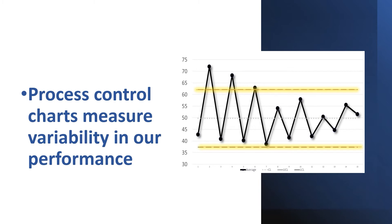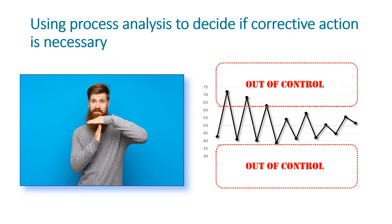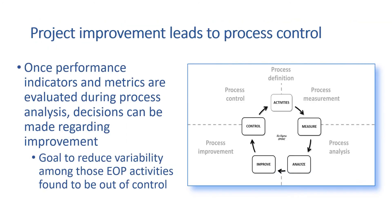The Six Sigma process control chart is constructed to represent upper and lower control limits, shown in these red boxes. These limits form the boundaries for what is considered an acceptable and unacceptable degree of variance. Events outside of the upper and lower control limits represent processes that are considered out of control and warrant corrective actions. Project improvement actually leads to process control. Once performance indicators and metrics are evaluated during process analysis, decisions can then be made regarding improvement. Goals to reduce variability among EOP activities can then be addressed, focused on those found to be out of control.